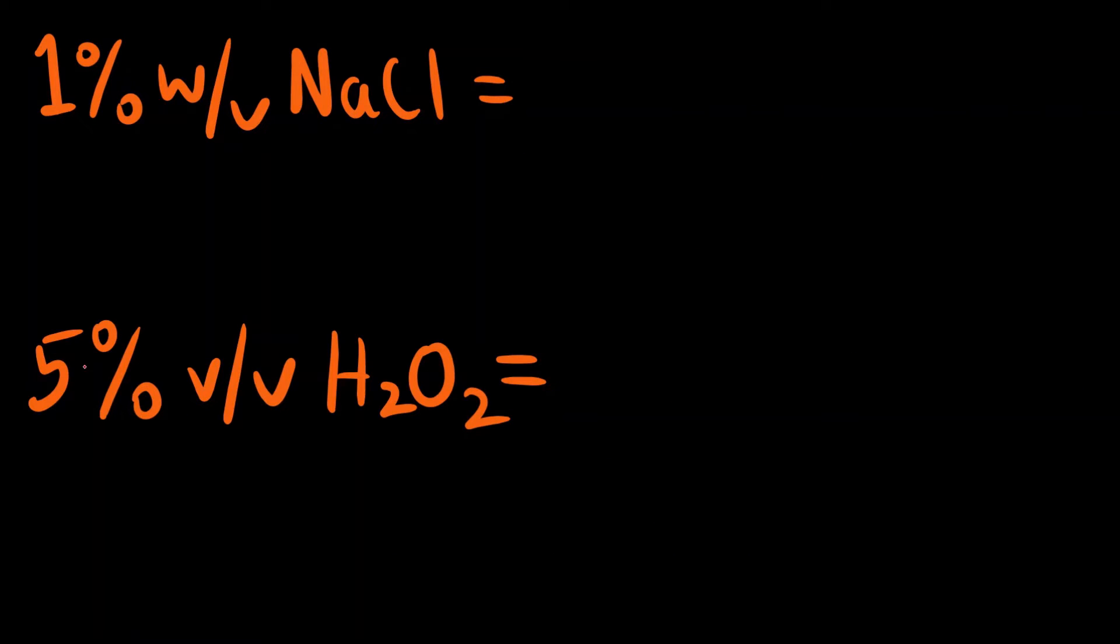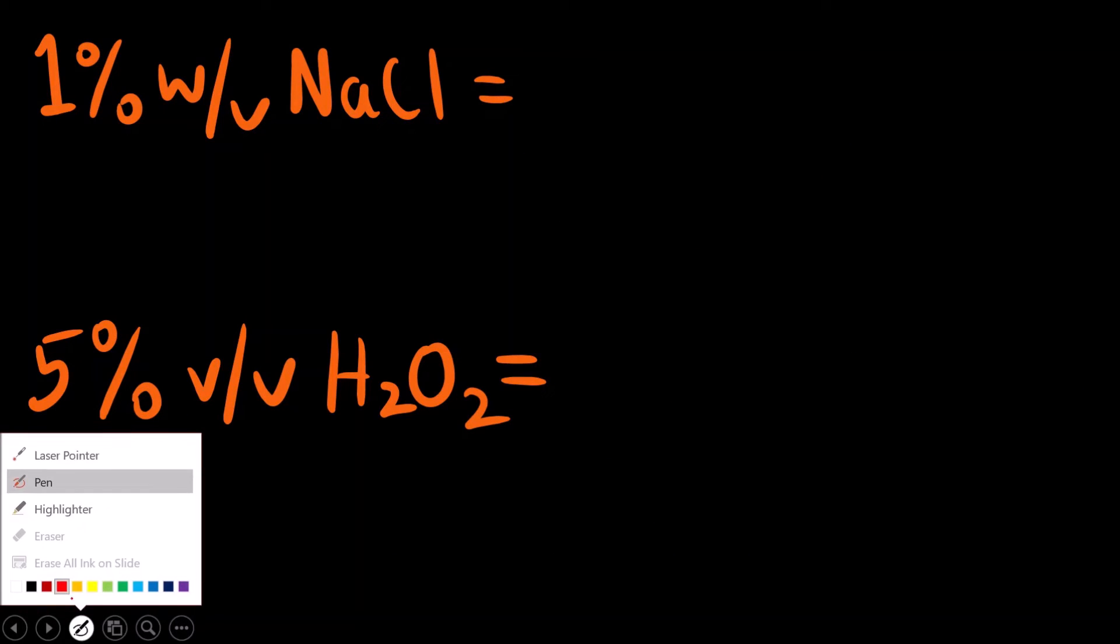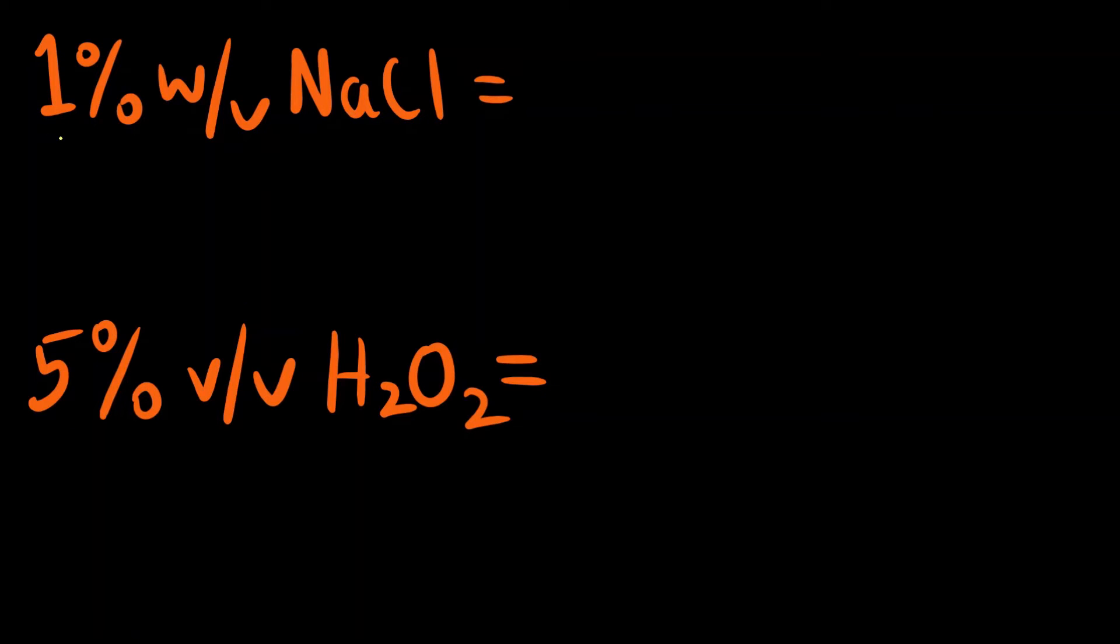Let us now try to solve these two questions to understand what is percentage weight by volume and percentage volume by volume. Suppose in a question or on a reagent bottle if it is written 1% weight by volume of NaCl, the solvent is water because NaCl is easily soluble in water since it is an ionic compound.